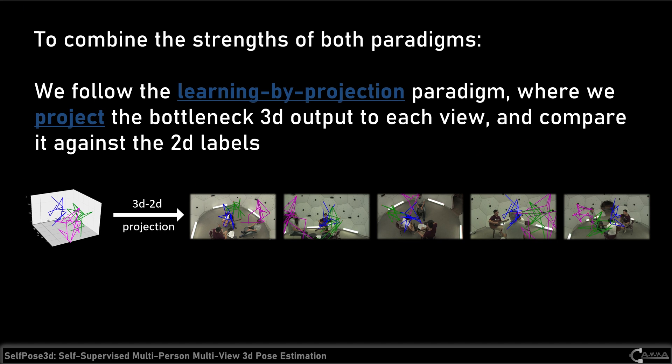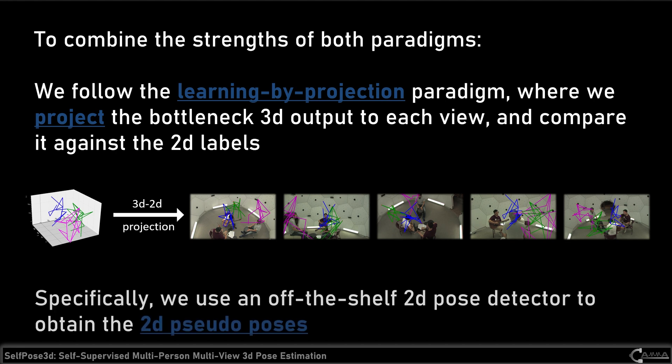Our Self-Pose 3D approach follows the learning-by-projection paradigm by projecting the bottleneck 3D output to each view and comparing it against the 2D labels. Specifically, we use an off-the-shelf 2D pose detector to obtain the 2D pseudo poses. Therefore, our approach does not require any 2D or 3D ground truth poses and uses only the multi-view input images from a calibrated camera setup.